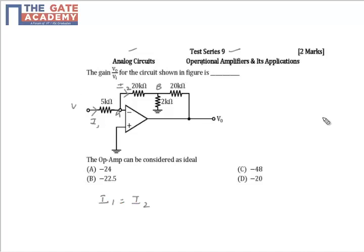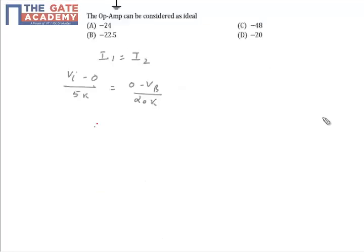We will have input VI. So I1 is nothing but VI minus 0 by 5k is equal to 0 minus VV by 20k. Now we know that, just solve it and you will get VI is equal to minus VV by 4. This is one relation we got.